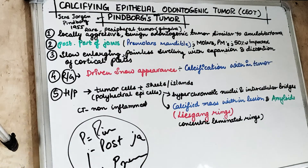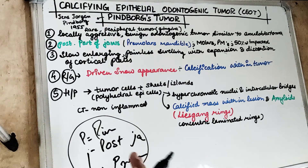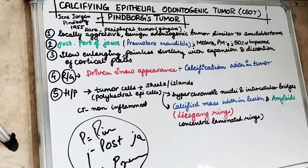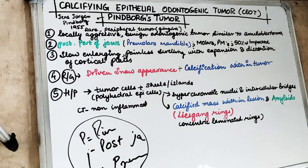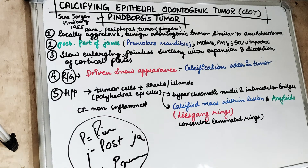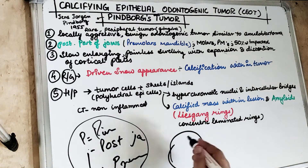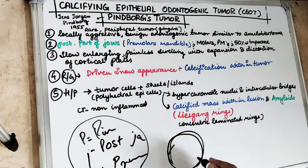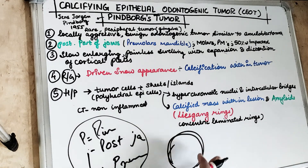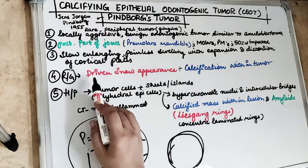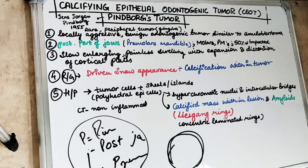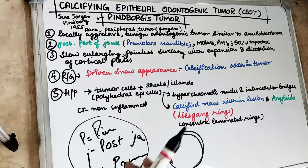As the name suggests, there is calcification present within the tumour, which gives a characteristic radiographic appearance called the 'driven snow appearance' — like snow driven into the wind. There are foci of radiopaque calcification present within the radiolucent zone, creating this distinctive mixed radiographic pattern.